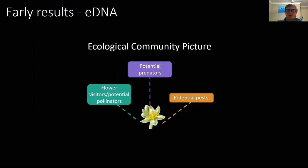eDNA gives you this community picture — the overall web occurring in an orchard. This would be a very powerful biomonitoring tool for managers: who's pollinating, who are your predators, who are your pests, enabling more effective management strategies. We still live in the 1950s with some management strategies — just spraying insecticides and hoping for the best. A cherry orchard in Donnybrook had no pollination at all due to too many insecticides. We need tools to monitor this, and eDNA used at scale could make us more effective land managers.